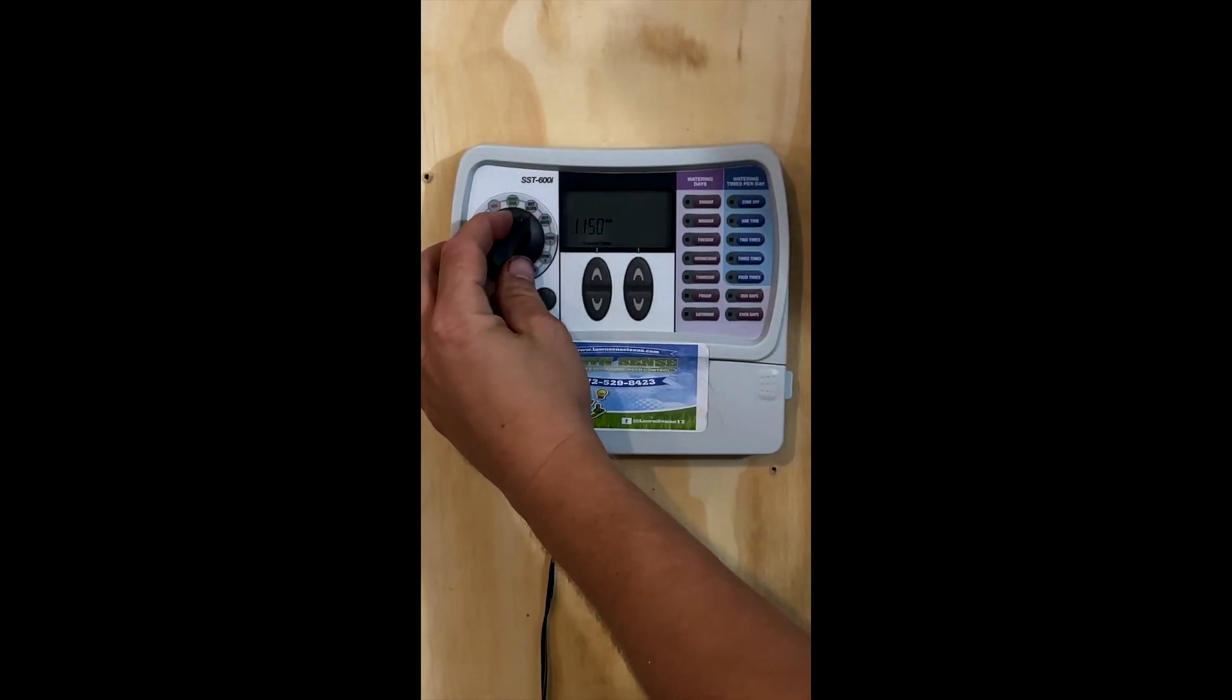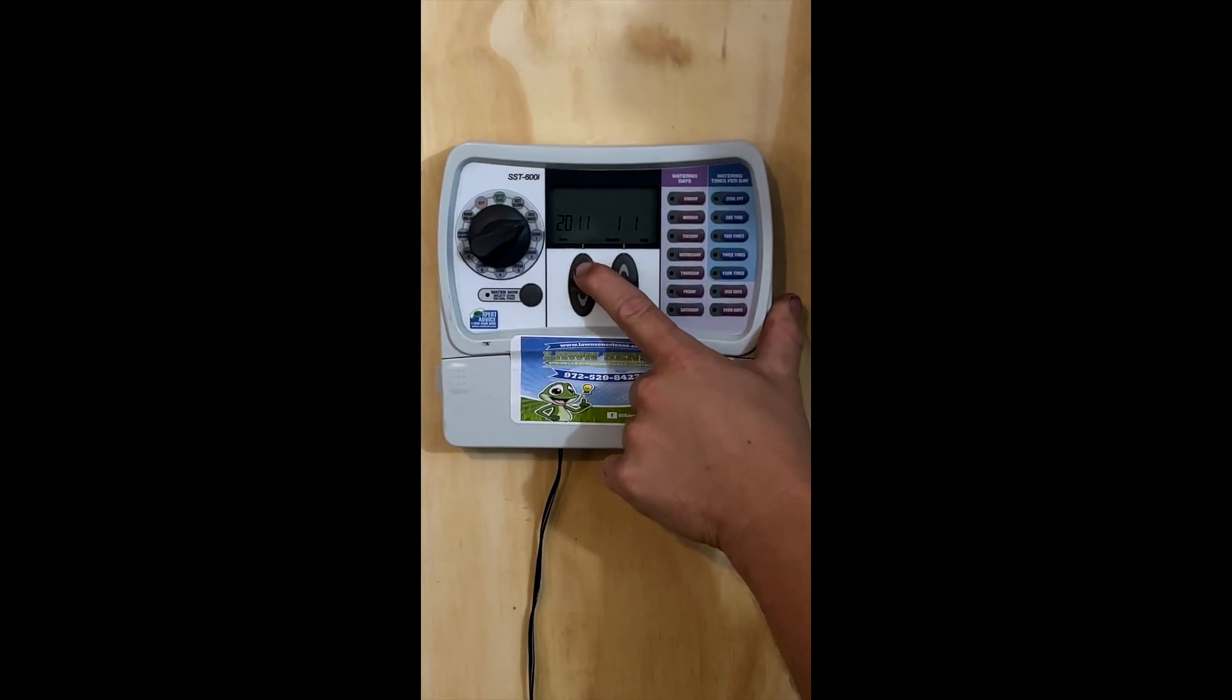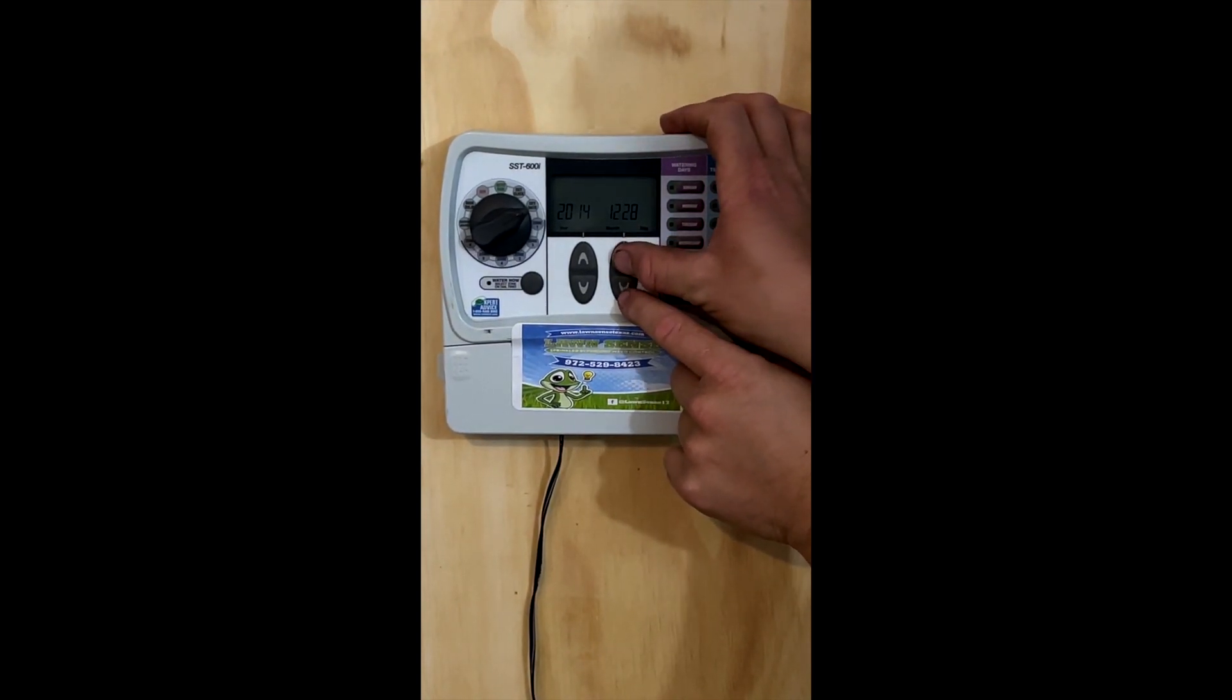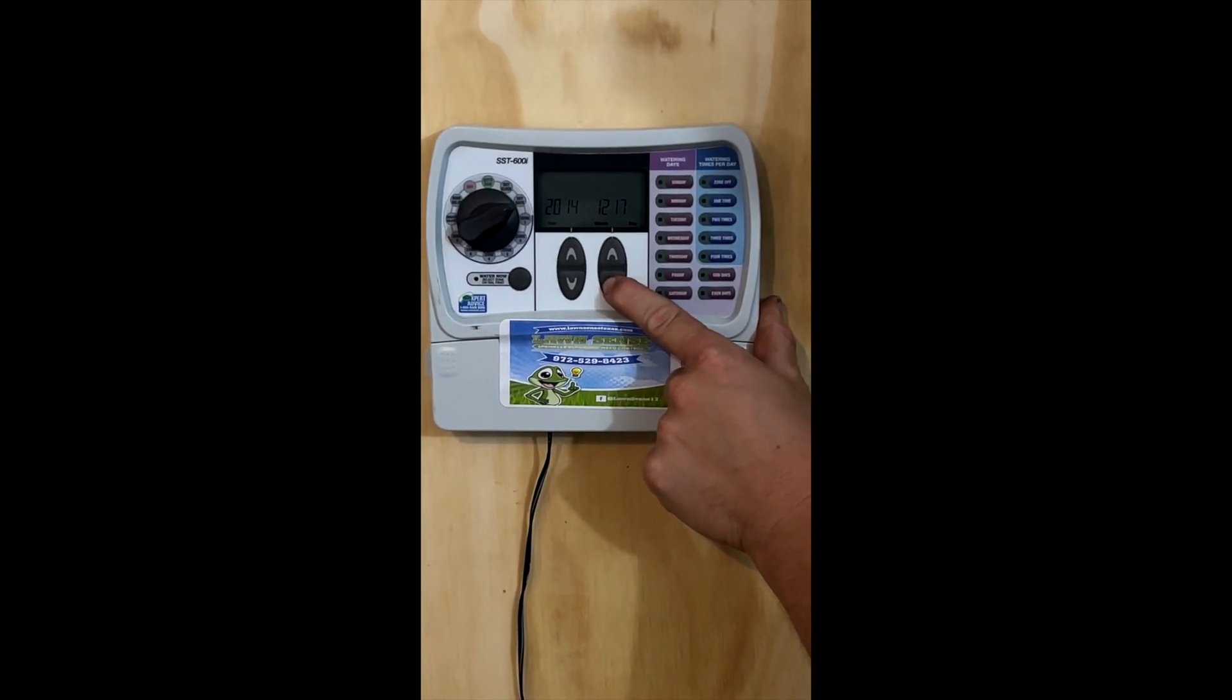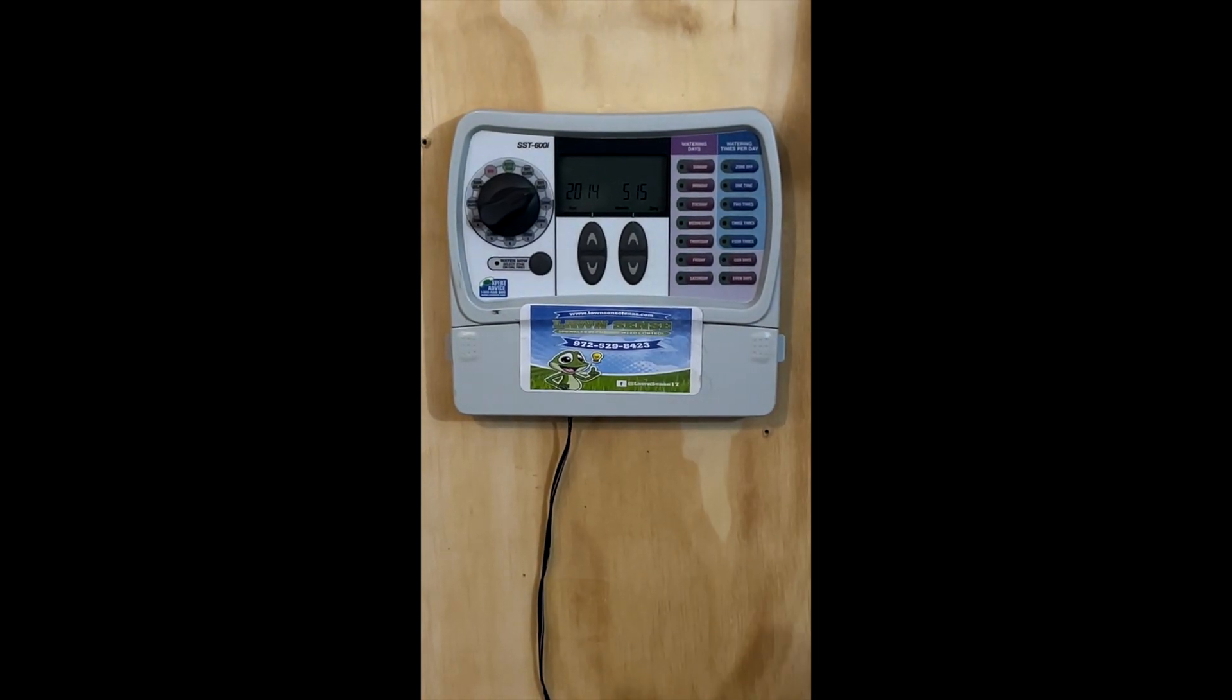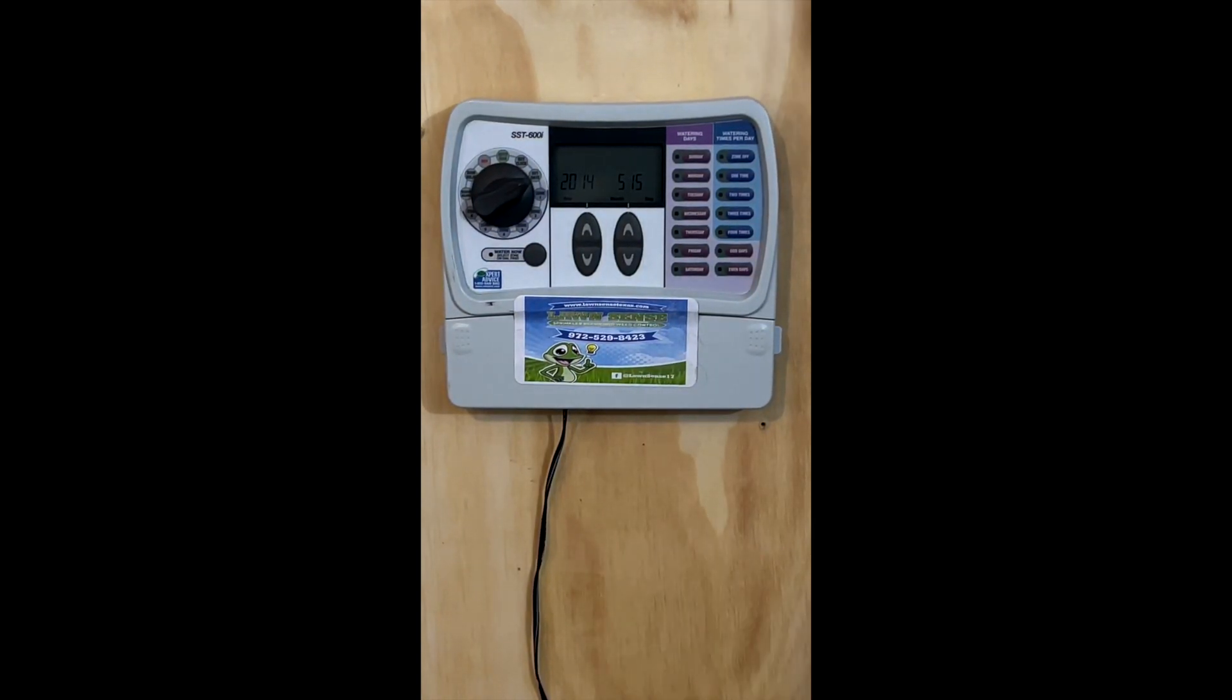Then we'll go over to set date. Same thing. We're going to go through and set our year. These arrows right here are going to move through the entire calendar set. So if you hold it down, it should eventually start a fast run, and that will allow you to take it to whatever date, month and day that you need to set it for.